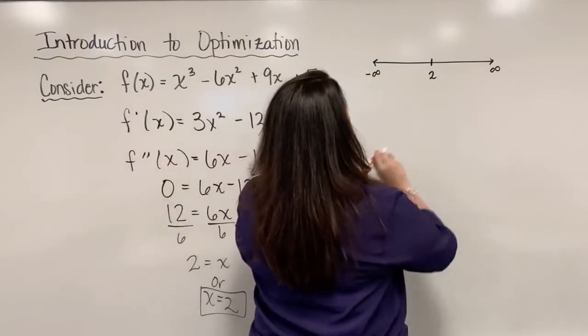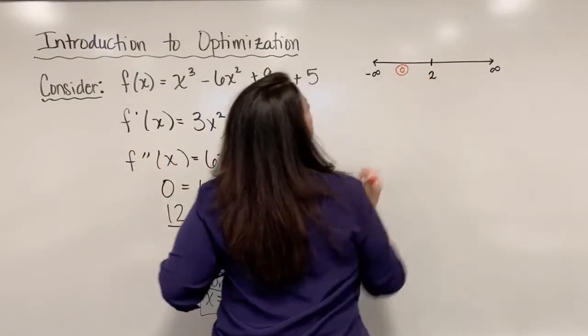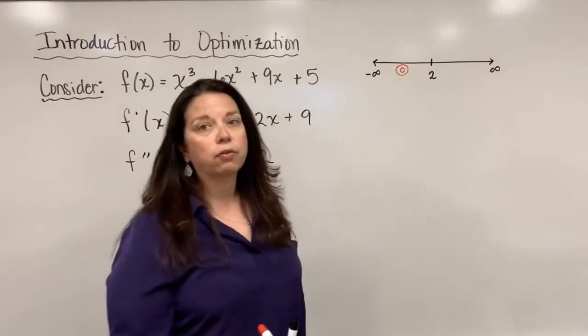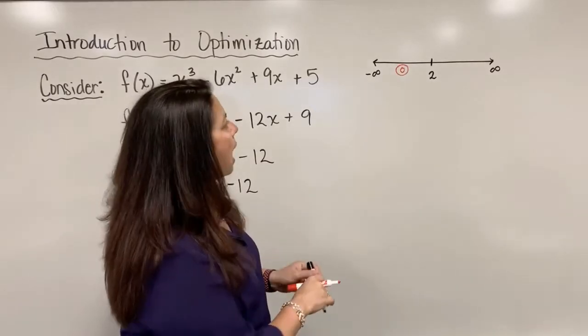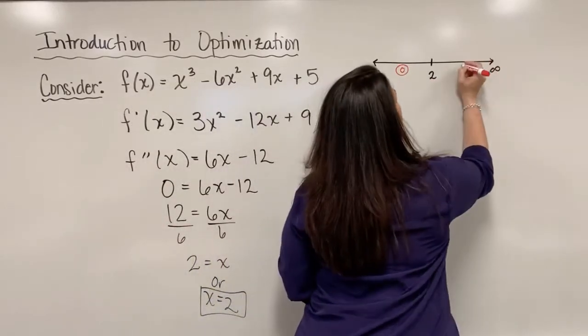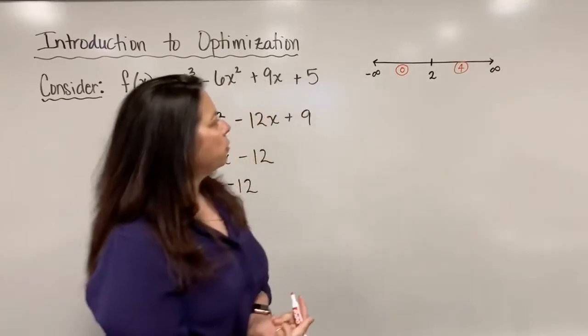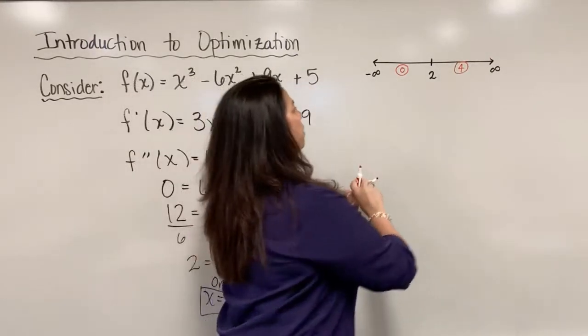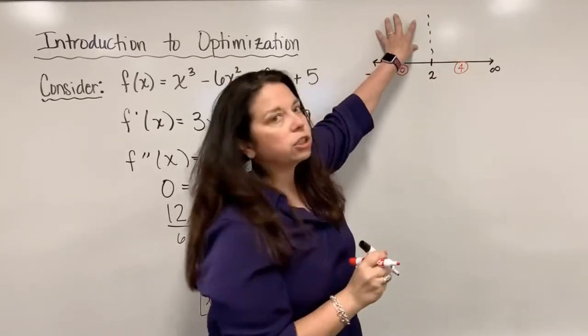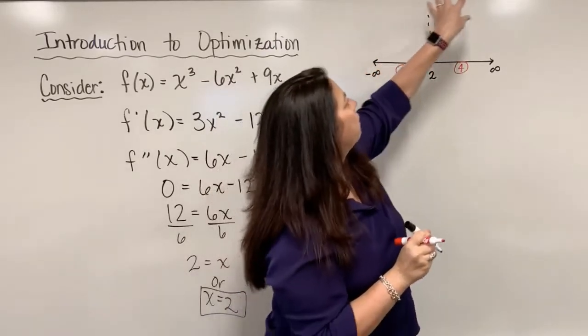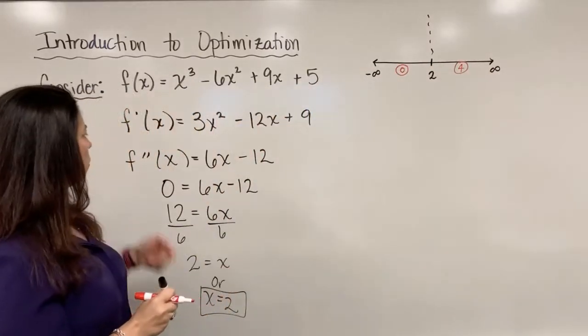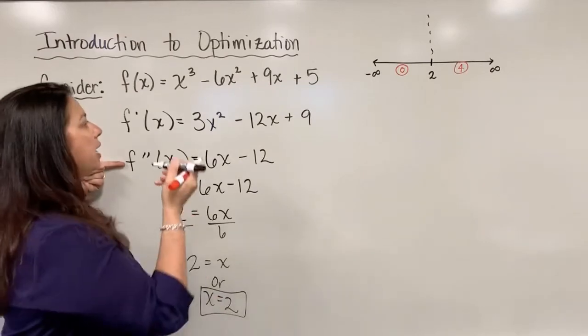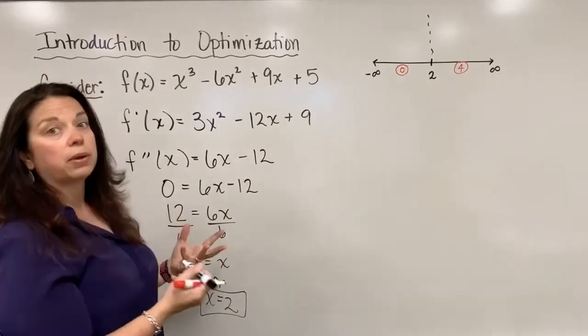I think we'll pick 0 for the first test point. 0 lies in the interval between negative infinity and 2, and above 2 how about 4. In those particular places, 0 and 4, I need to figure out if in this region my second derivative is positive or negative, and same for this region.